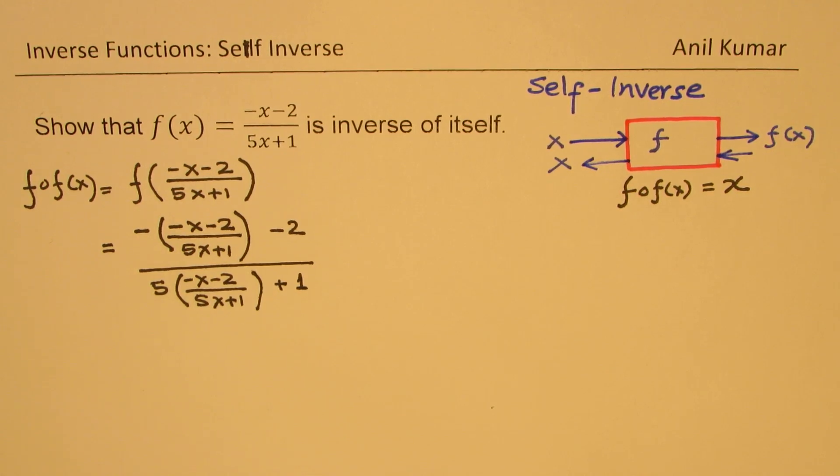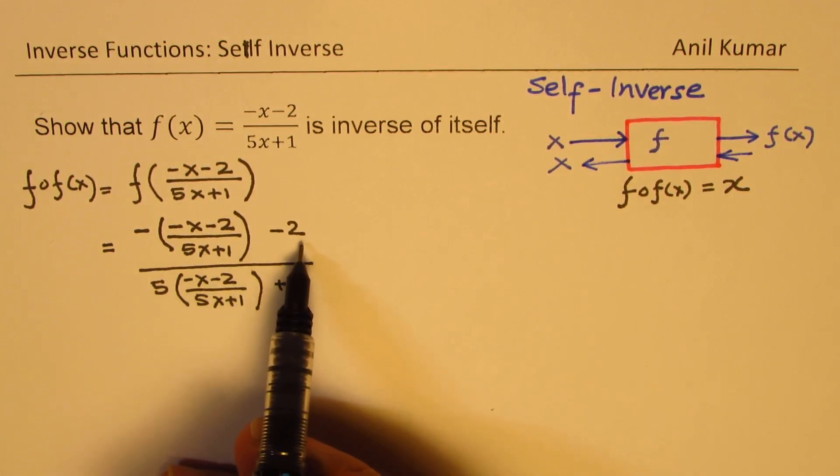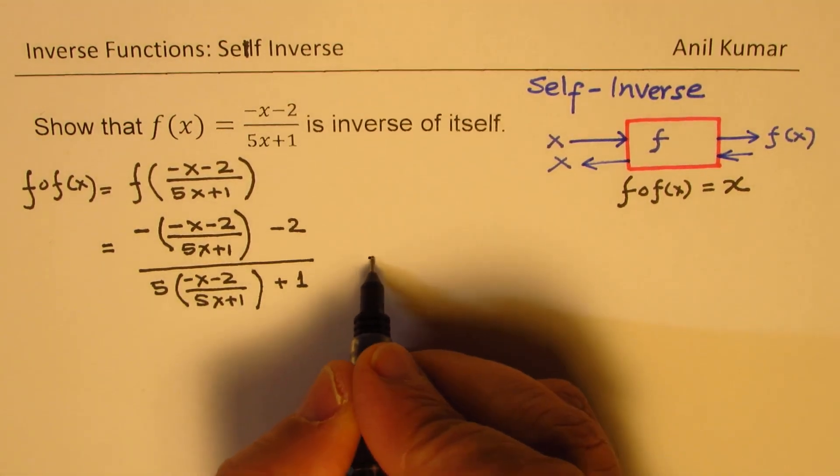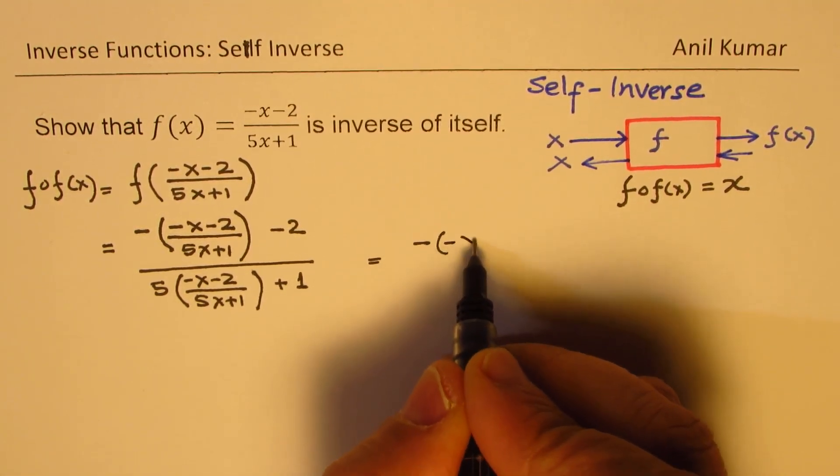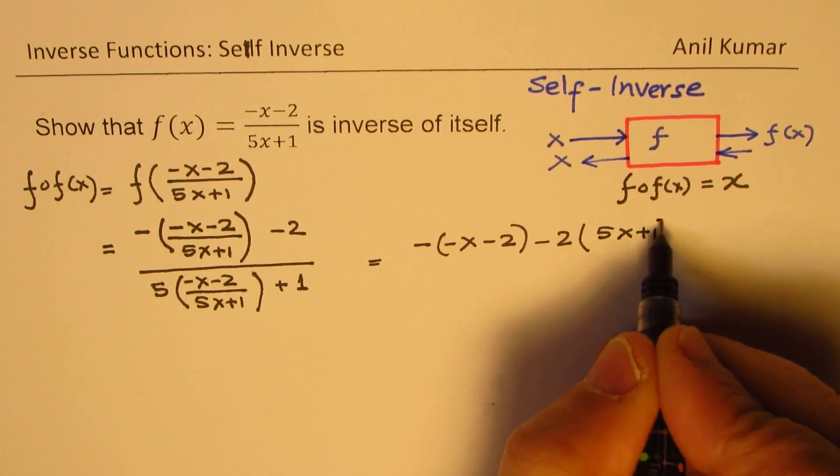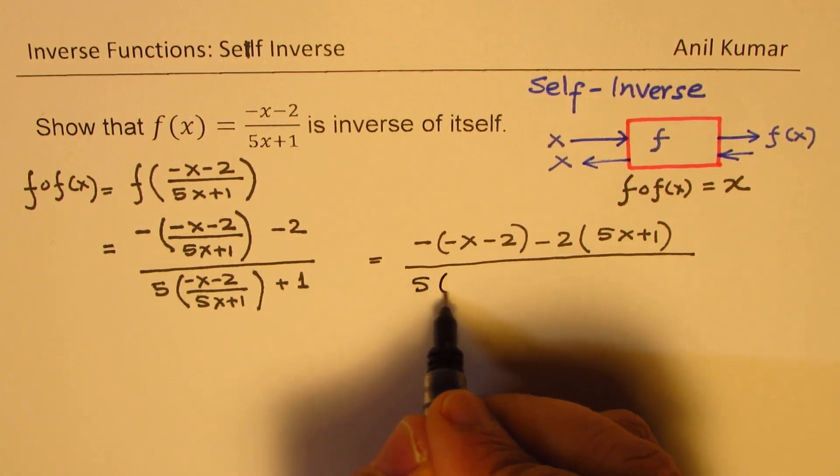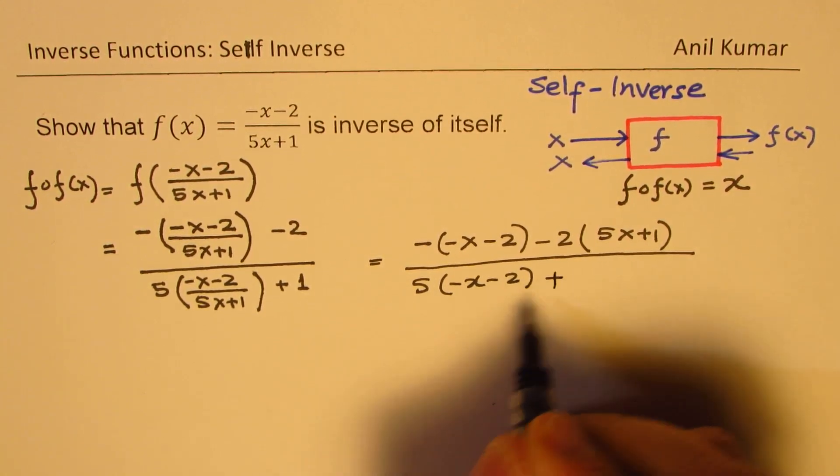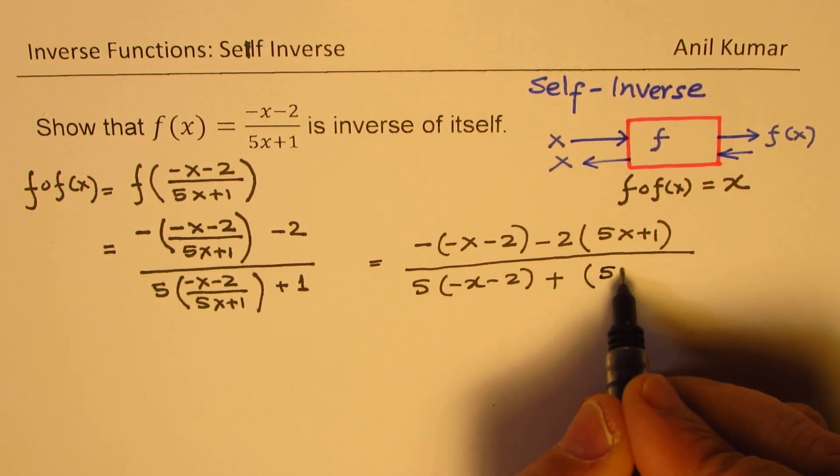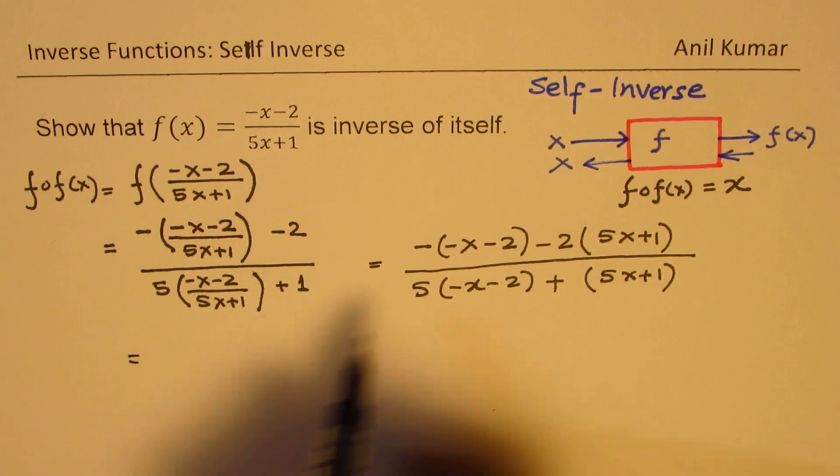Now, we need to simplify this. The best way to simplify is to get rid of this denominator 5x plus 1. So we will multiply each and every term with this. And what we get here is minus of minus x minus 2 minus 2 times 5x plus 1 in the numerator divided by, here we have 5 times minus x minus 2 plus 1 times 5x plus 1. So these two terms cancel away when you multiply both by 5x plus 1.